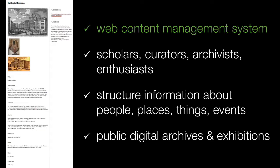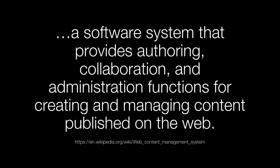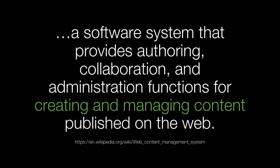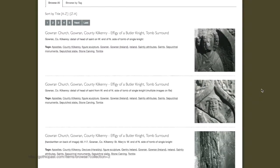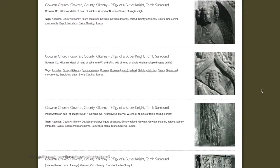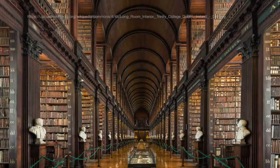What is a web content management system? To paraphrase Wikipedia, it is a software system that provides authoring, collaboration and administration functions for creating and managing content published on the web. So, even if you've never heard the term, you've probably come into contact with one. WordPress is one of the most widely known content management systems. Every content management system organizes information differently, whereas WordPress was designed for blogging. Omeka was designed for organizing and presenting archival information about physical objects and cultural concepts.